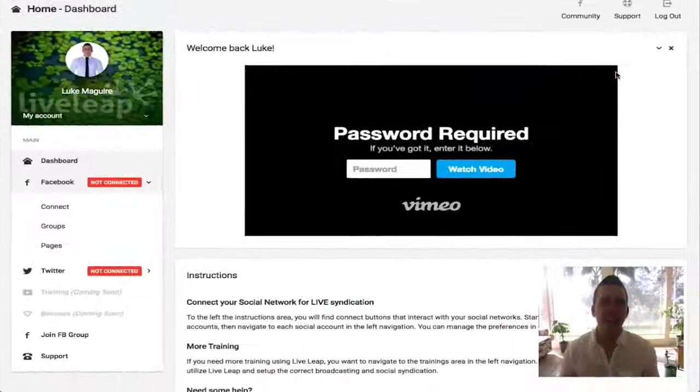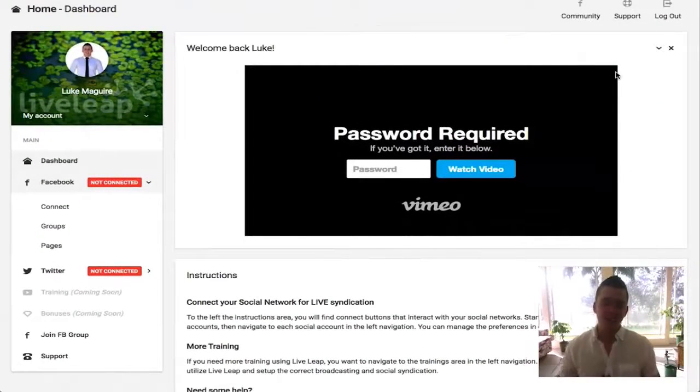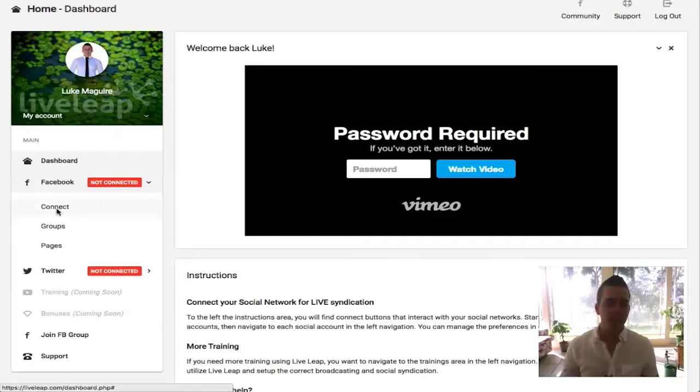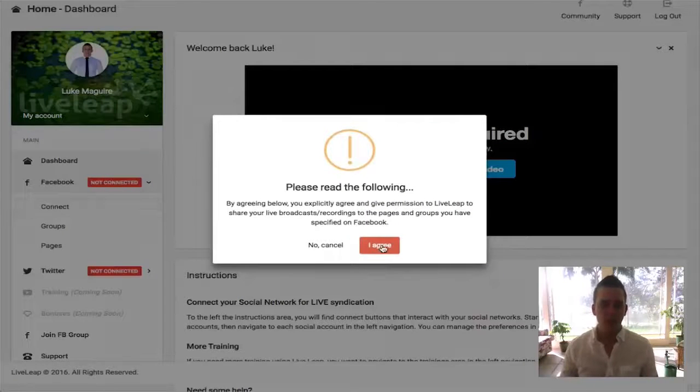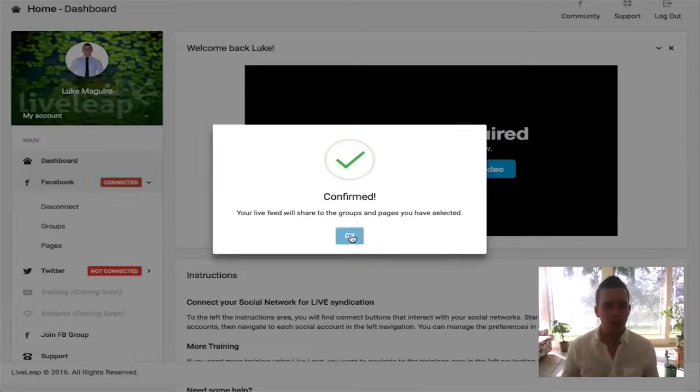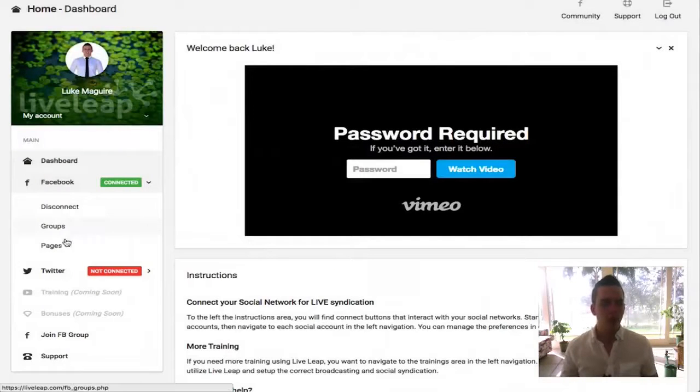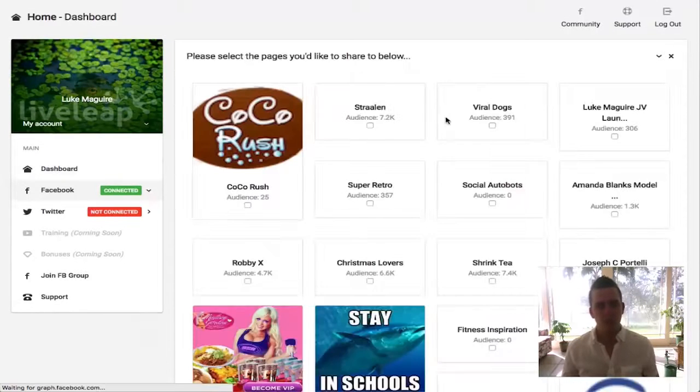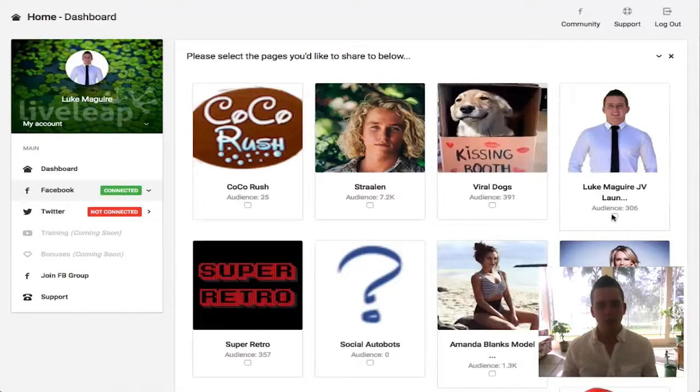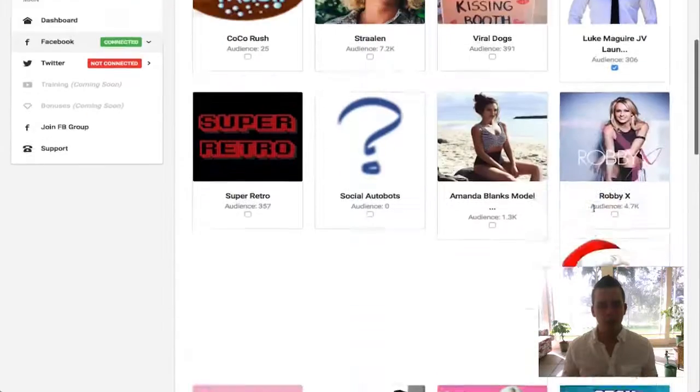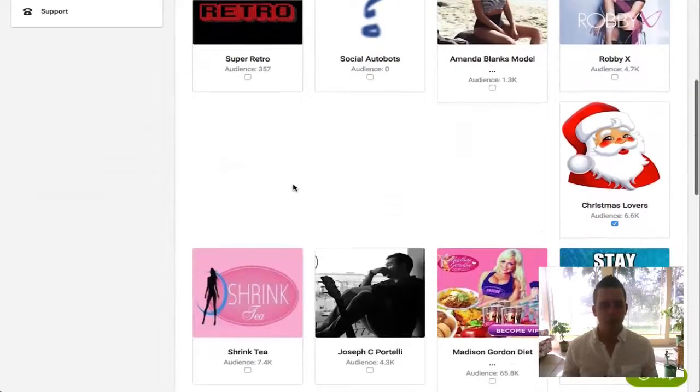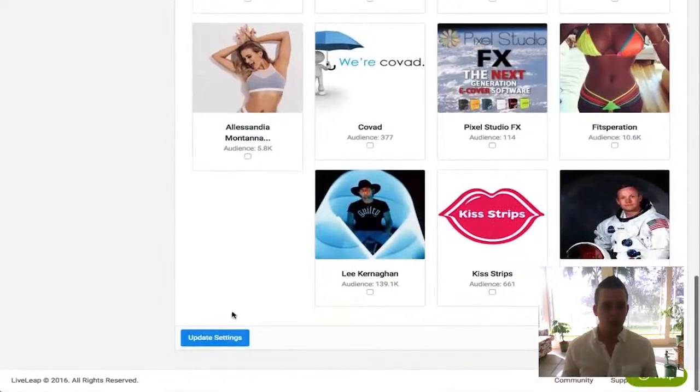Alright guys, let me show you how easy this is to set up and completely leave it on autopilot in the background forever. We're going to connect our Facebook account, hit I agree that I want to share it across multiple pages and groups. I'm going to select a few pages we want to go live on, select my JV one, select this random Christmas one I've got going on here, and hit update and save.